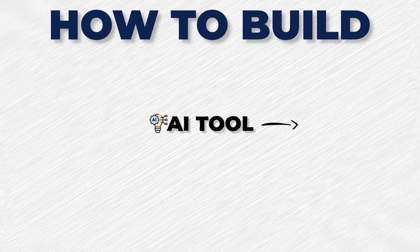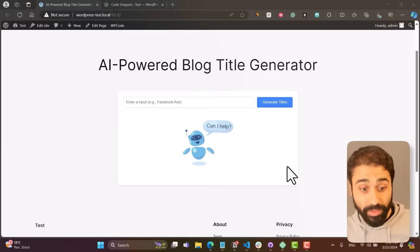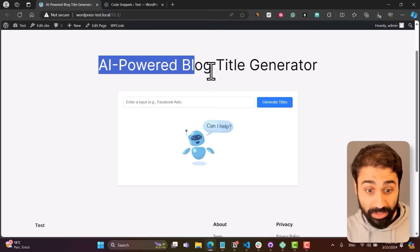In this video I will show you how to build an AI tool on WordPress with Google Gemini totally for free. This is the tool we are going to build together: the AI powered blog title generator.